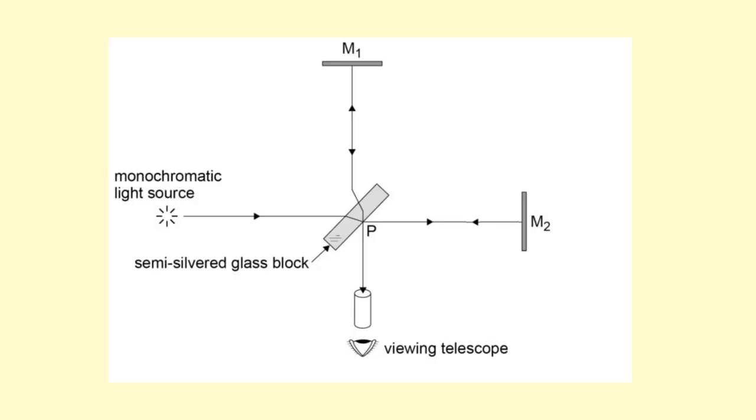Firstly, you have a monochromatic source of light which emits one single wavelength. That light travels to a semi-silvered glass block. Once it hits the semi-silvered glass block, some of it gets reflected. This part travels down, gets reflected off the mirror, comes back, goes through point P, and goes to the telescope.